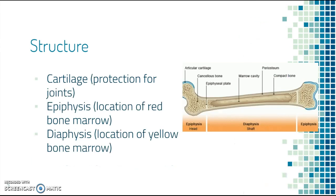Let's take a quick look at structure. We have cartilage, which is part of our skeletal system, and that's going to serve protection for joints. We have an epiphysis, or several epiphyses, which are going to be the location of the red bone marrow, and then we have diaphysis, which is the location of the yellow bone marrow along the shaft of a long bone. We're looking at a long bone here.